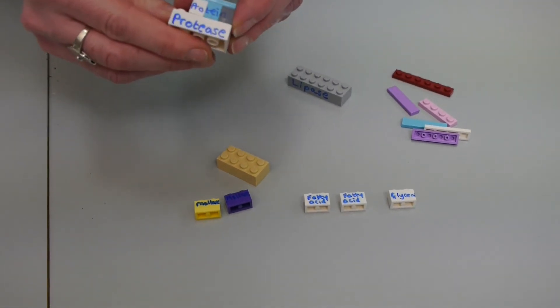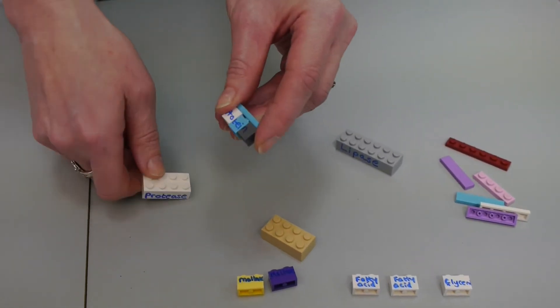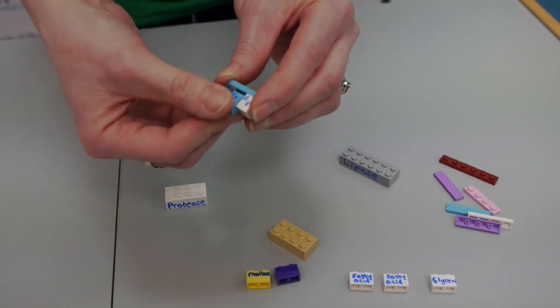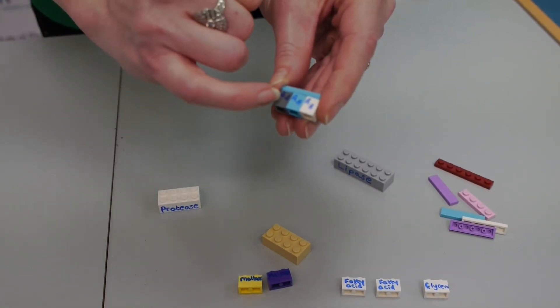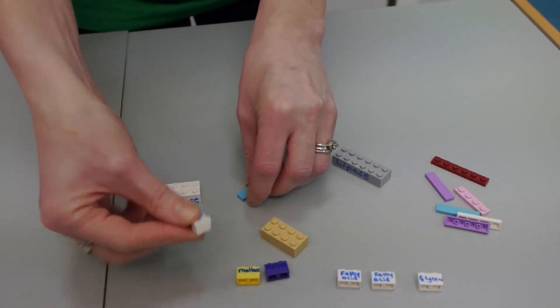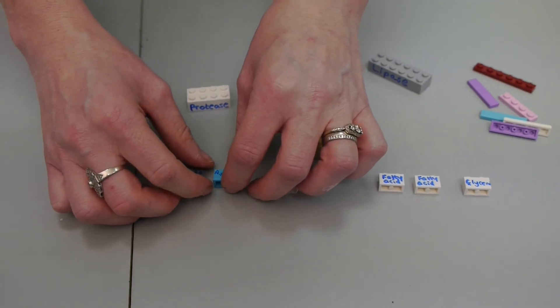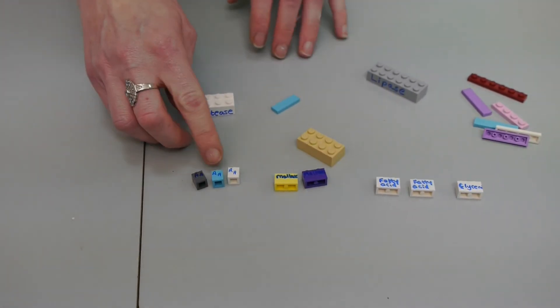And similarly with the protease, protease will break down a protein and it will give me small molecules of amino acids. Obviously the brick being small so I've just written AA on it for the students. I remove the connector and I can prove or show the students that I have a small product of amino acids.